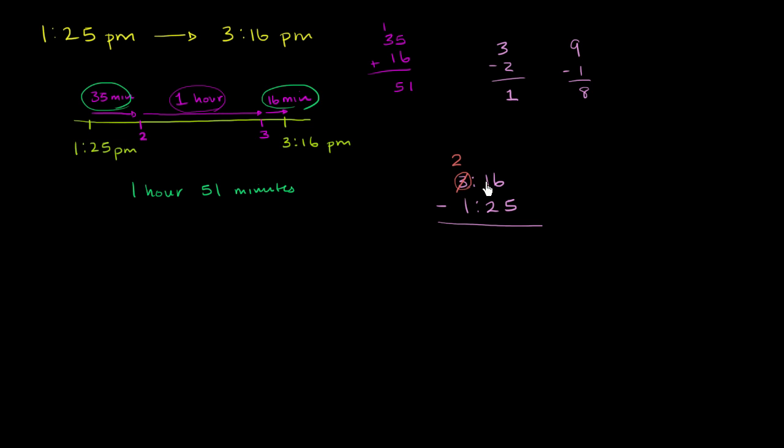But since we're talking about hours and minutes, this is the 10-minute spot and this is the 1-minute spot. If you take away 1 hour, you get 6 10-minute spots. So you add 6 to this spot right over here. So it's 1 plus 6 is 7. Now we can subtract. 6 minus 5 is 1, 7 minus 2 is 5, that's our minutes, and then 2 minus 1 is 1. We're 1 hour and 51 minutes.